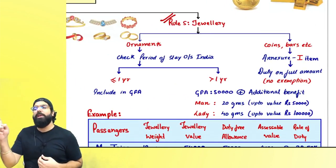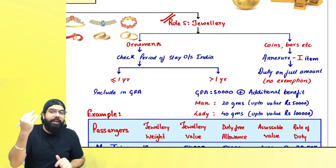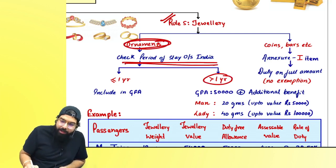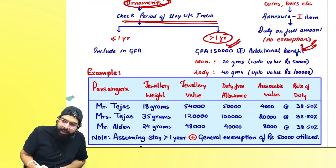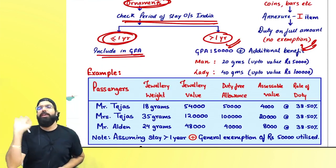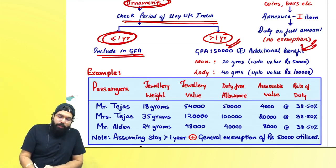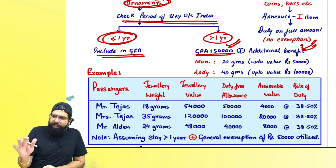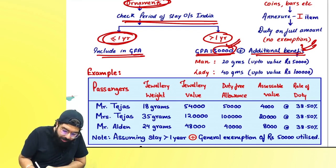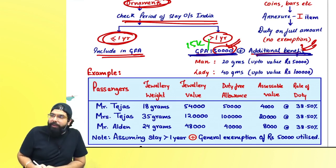Regarding jewelry: jewelry always has to be cleared within your general free allowance of 15,000 or 50,000. But if you have stayed outside India and are getting ornaments, check the stay duration. If the stay outside India is greater than one year, additional benefit will be given along with your general free allowance. If the stay is up to one year, it must be cleared within the 15,000 or 50,000 general free allowance. If stayed more than one year, GFA plus additional benefit is given.